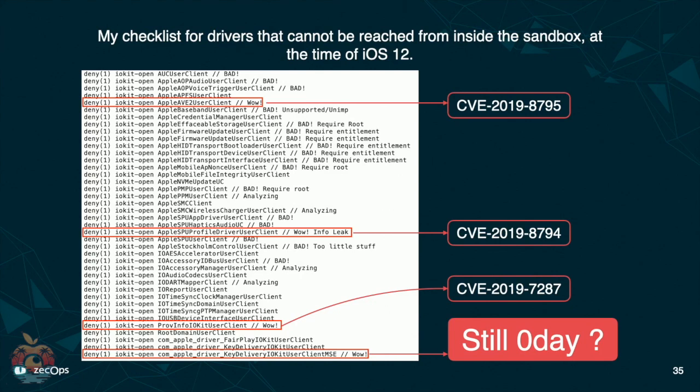Here is my checklist for drivers that cannot be reached from inside the Sandbox. You can create this list yourself pretty easily: download the firmware, extract all the property files of the launch daemons, then run an app to try to connect to every one of them. Meanwhile, use the console application to monitor the logs, and you will see a list of denied access. The details of the first three have been made public — you can find them on the internet. The last one is an interesting one that I have never reported to Apple.